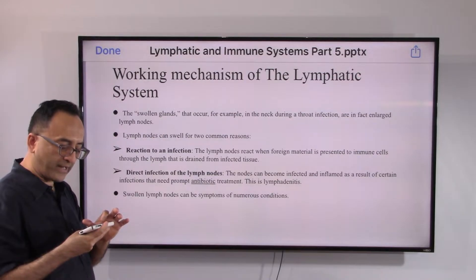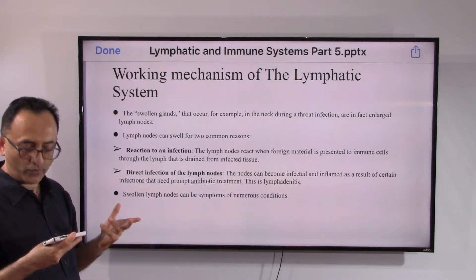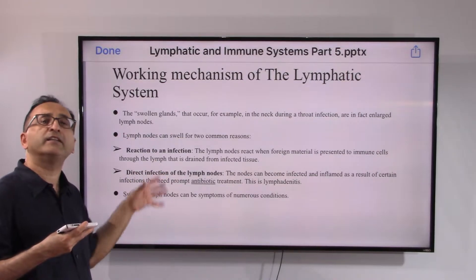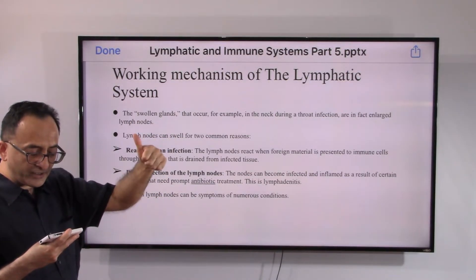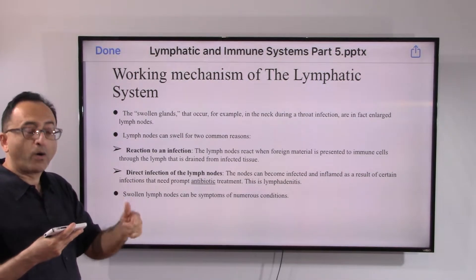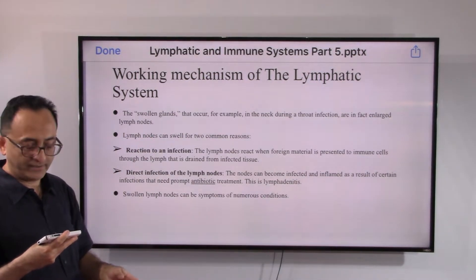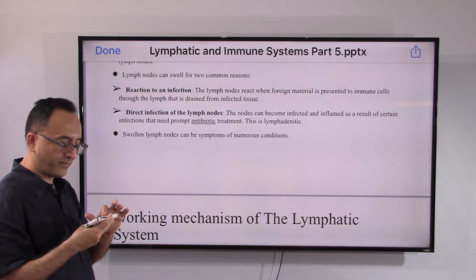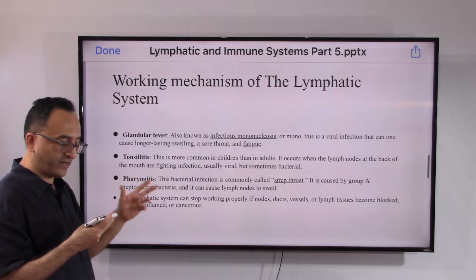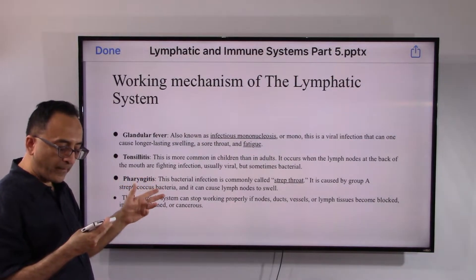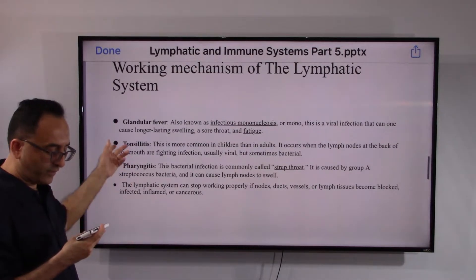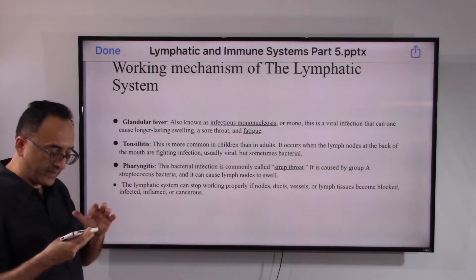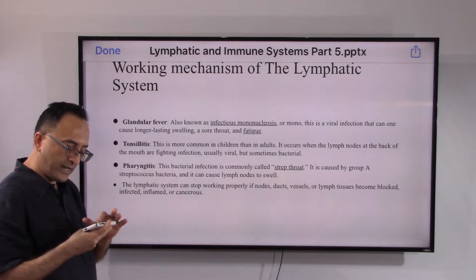We talked about swollen glands, which are basically enlarged lymph nodes. This can happen during the creation of an immune response — either because the lymph nodes are directly infected or there is a reaction to an infection nearby. In either case, we end up with enlarged lymph nodes. This can occur with a fever, mononucleosis (a viral infection), inflammation of the tonsils, or strep throat — the medical name for which is pharyngitis.